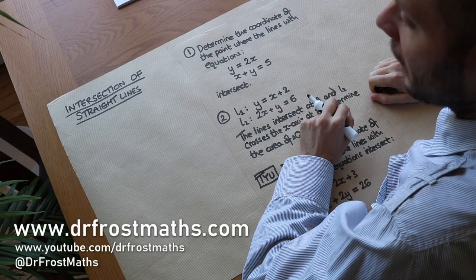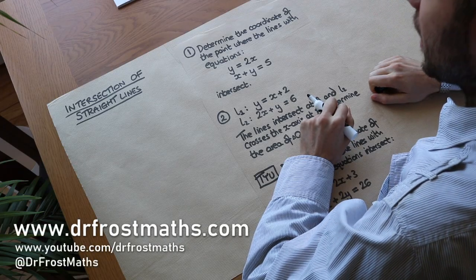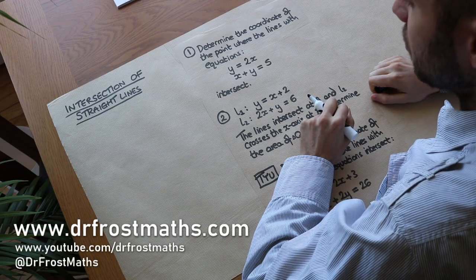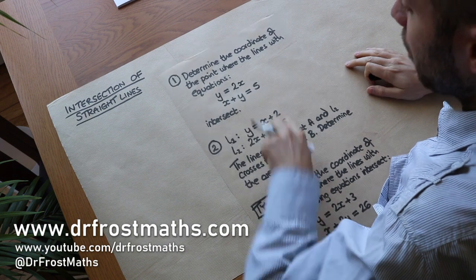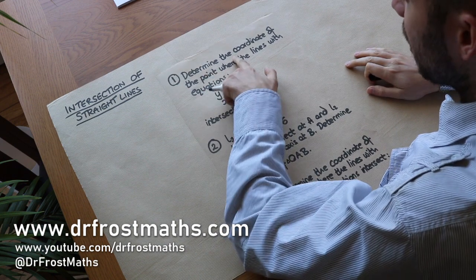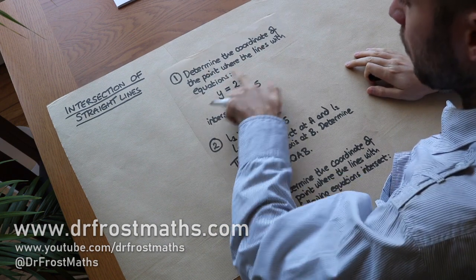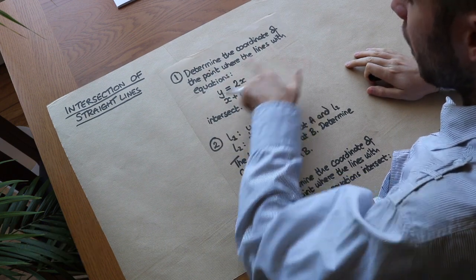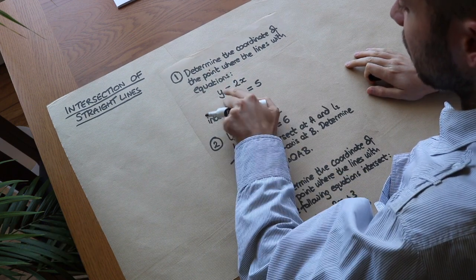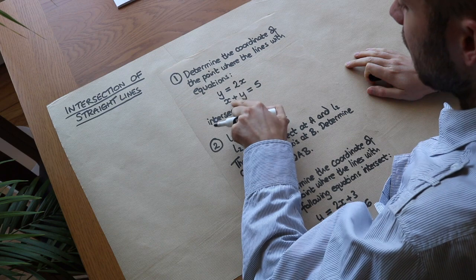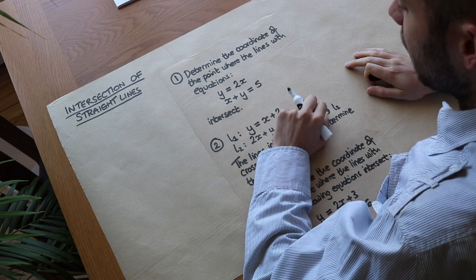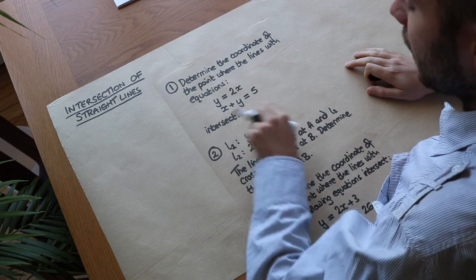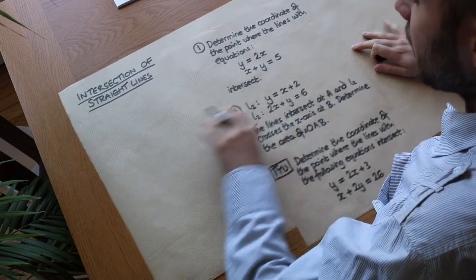Hello and welcome to this video on finding the point of intersection of straight lines. We want to determine the coordinate of the point where the lines with equations y equals 2x and x plus y equals 5 intersect.